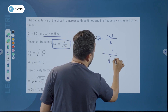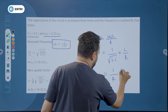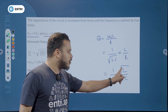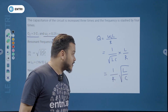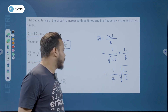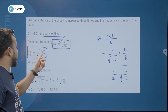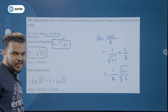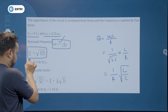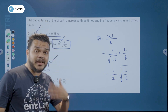We can write quality factor as 1 by R into root of L by C. The relation omega 1 by omega 2 equals root of L2C2 divided by L1C1, since omega is inversely proportional to root LC. Applying omega 2 equals 0.25 omega 1, we get L2 equals 16 by 3 times L1.